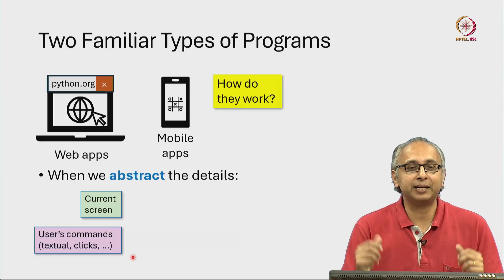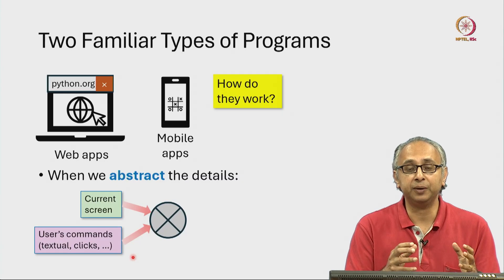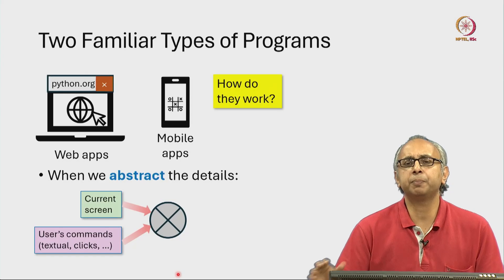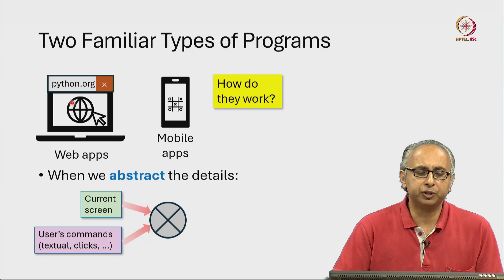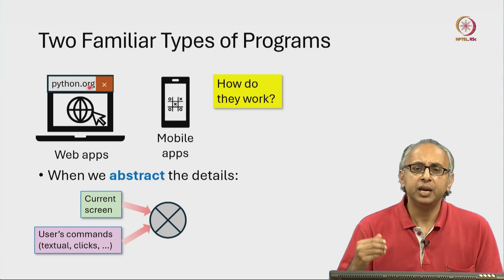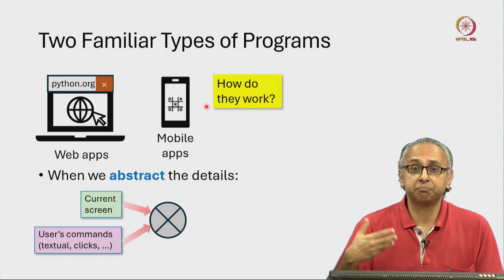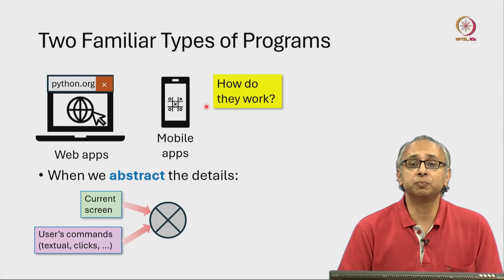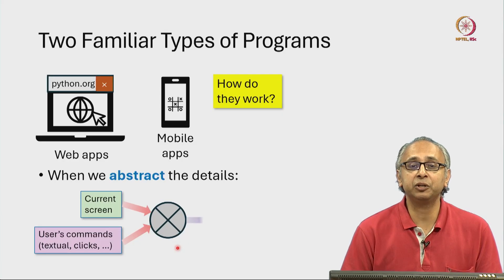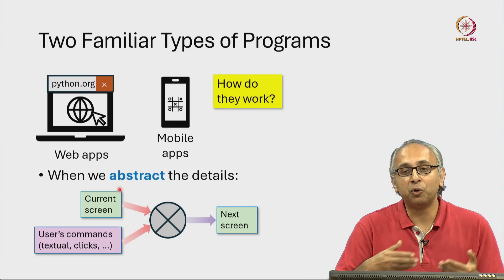The way we can abstractly think about what the program is doing is: it's taking both pieces of information — the current screen and whatever the user has done to interact with that screen — and it's doing some complex calculation depending on what the purpose is. For example, if the user has entered a website in the browser, this complex calculation will involve fetching information from some remote server. In contrast, if the application is playing a game, then as the user clicks something, the game engine decides what its move should be. This could be a very complex calculation indeed, but the end result is the next screen.